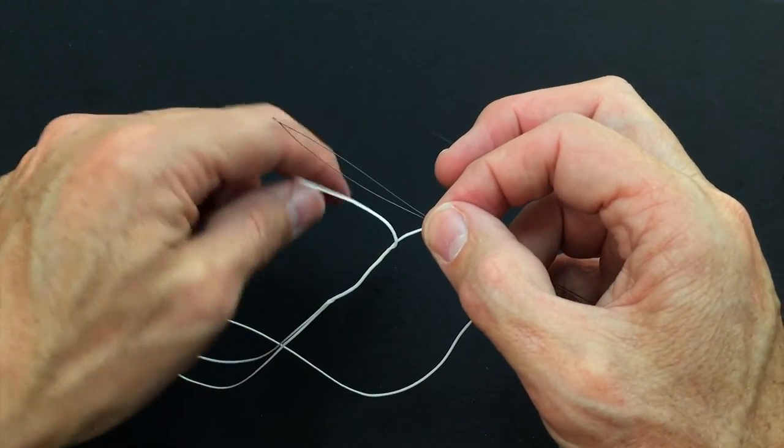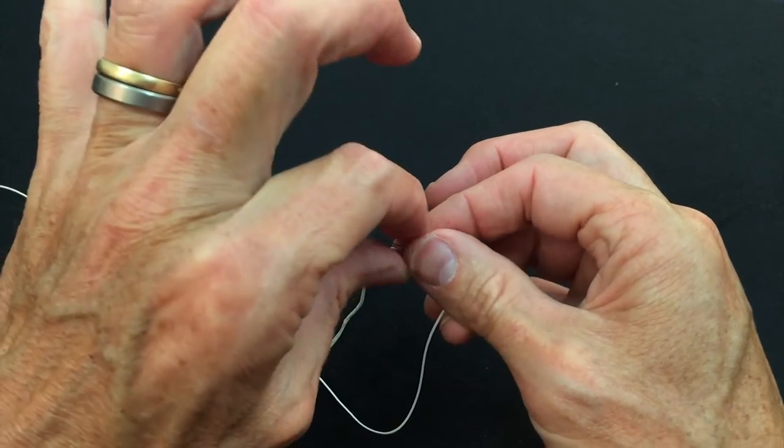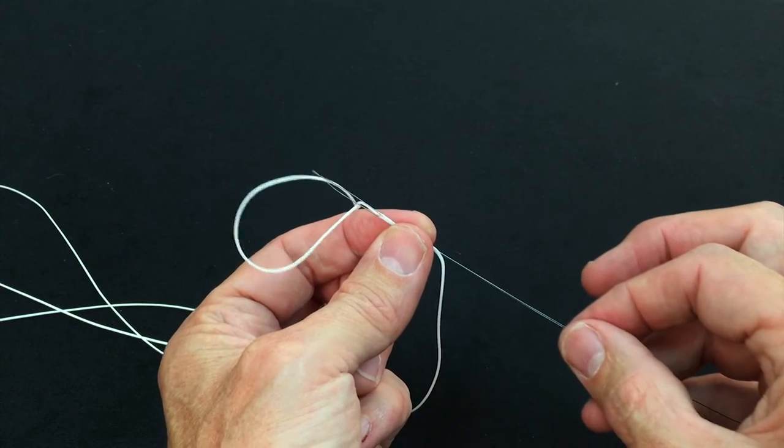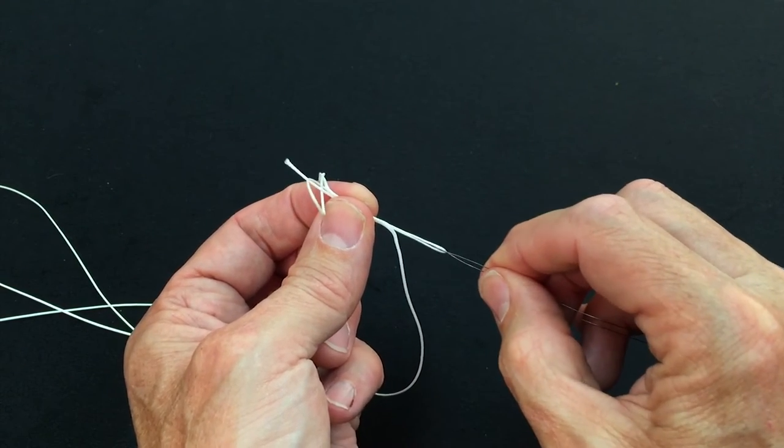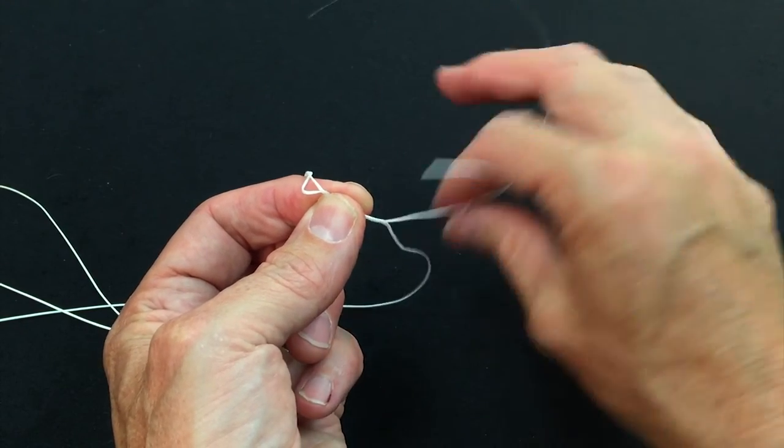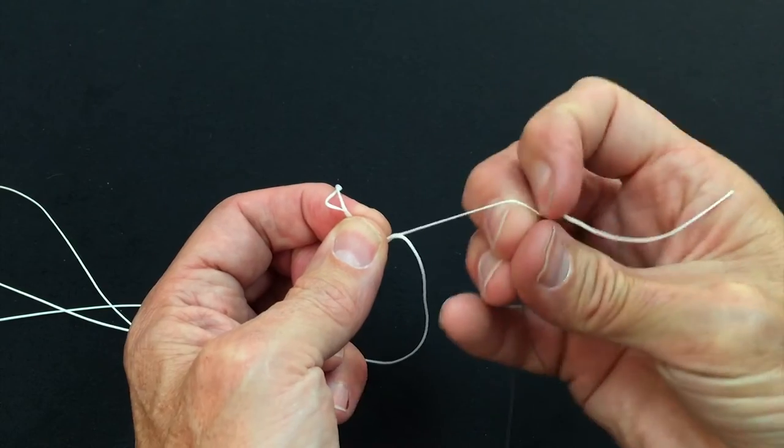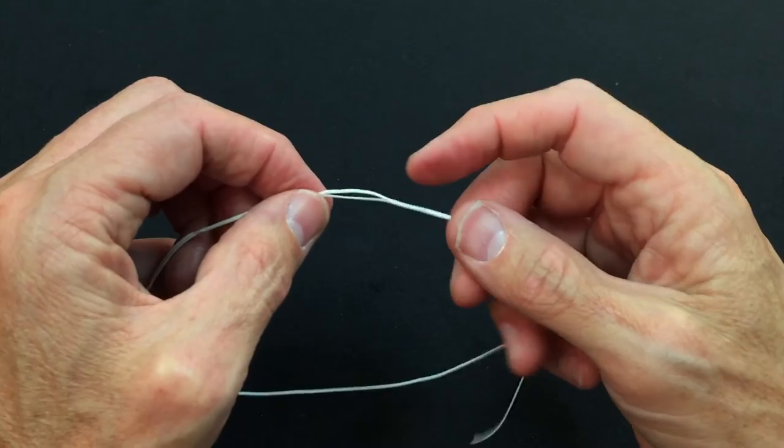Put the tag end through the piano wire. Pull that through like this and the tag end is going to disappear up that second sleeve, if you like, tube. Pull the tag end all the way out. Get rid of the wire.